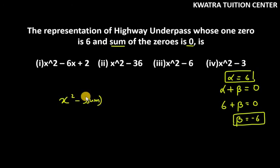x²-sum of zeros×x+product. So x² minus sum. How much sum will be? It is 0. It is 0x. How much product will be? It will be 6 into minus 6. It is minus 36. So x²-36, which is second number.